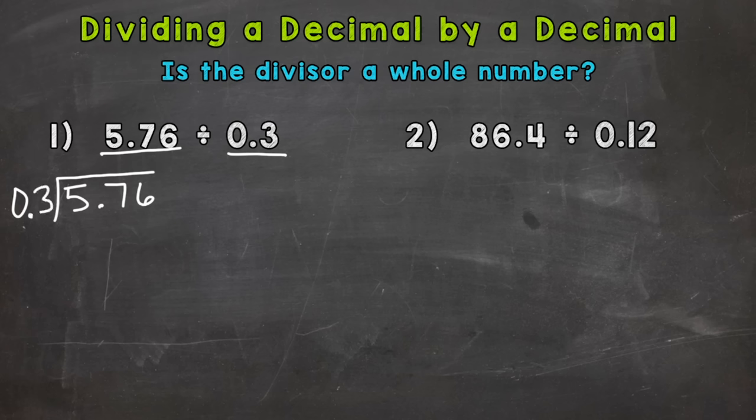Now that we're set up, we need to ask ourselves a very important question before we start this problem: is the divisor a whole number? In this case, three tenths is not a whole number. We need to have a whole number on the outside — that divisor — in order to go through our division process.